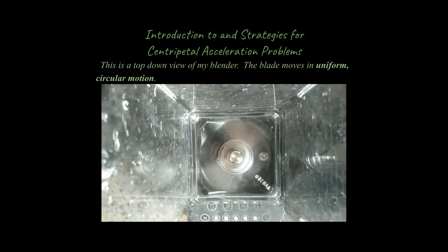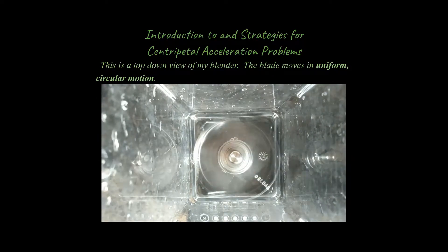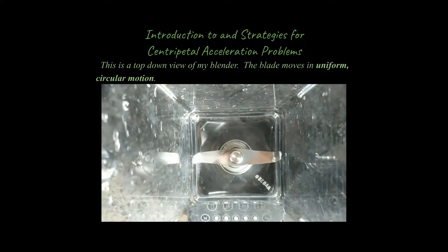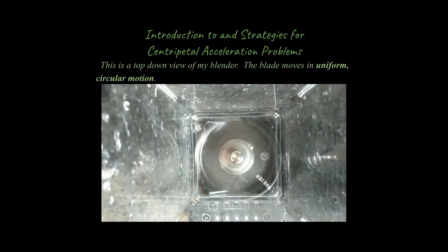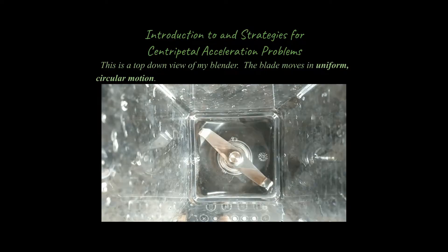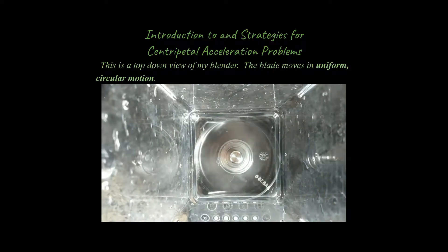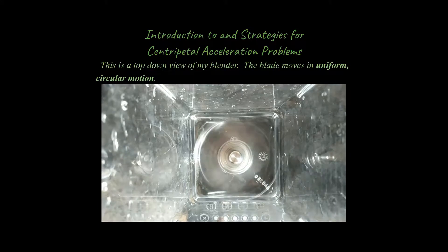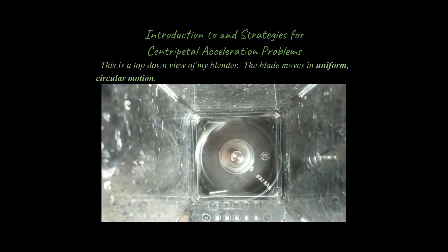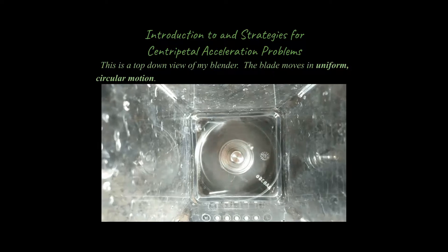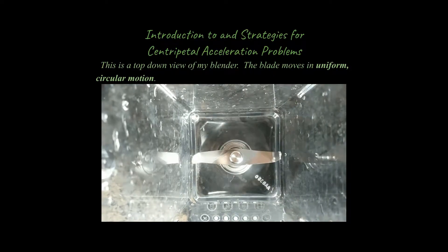What you're looking at right now is an animation of my blender. It moves so fast that you can't actually see it moving when it's in motion, but it is in motion. We're concerned with the portion when it is spinning at a constant rate — not when it speeds up or slows down. We're not concerned with angular acceleration. We're concerned with its constant rotation phase, which we would call uniform circular motion. Based on that, there is an acceleration involved that we need to talk about in more detail.